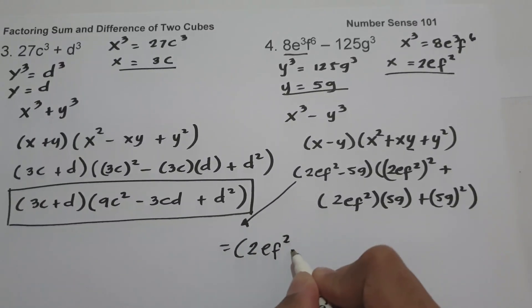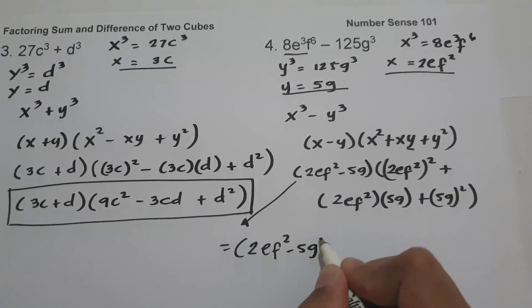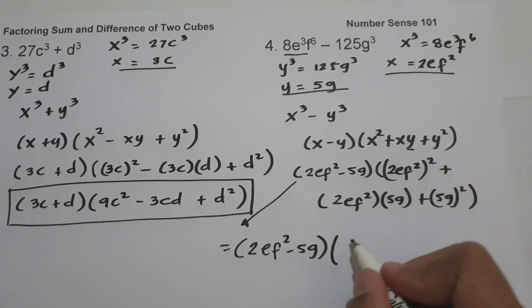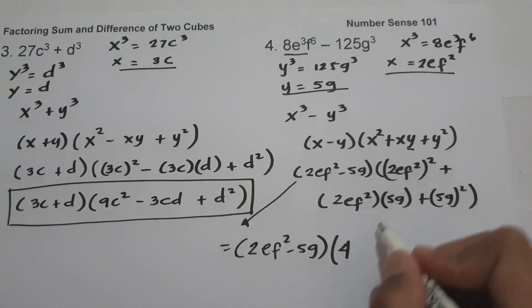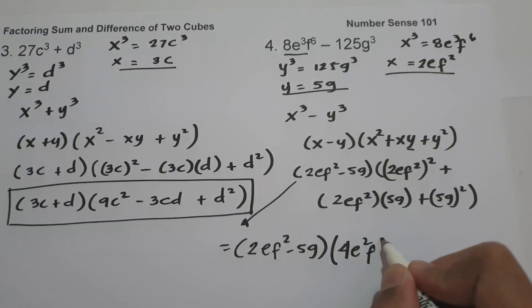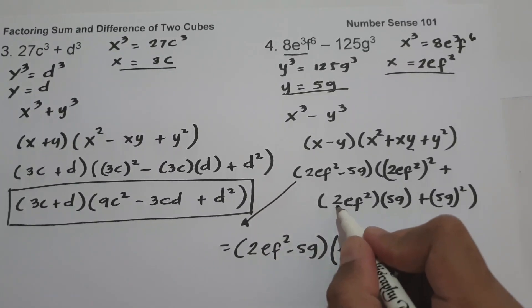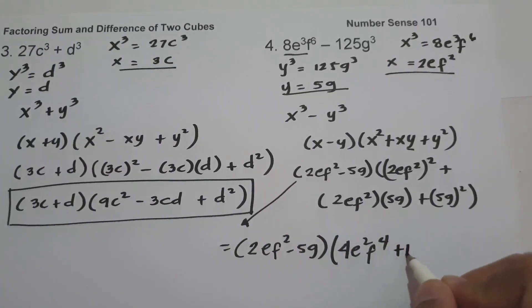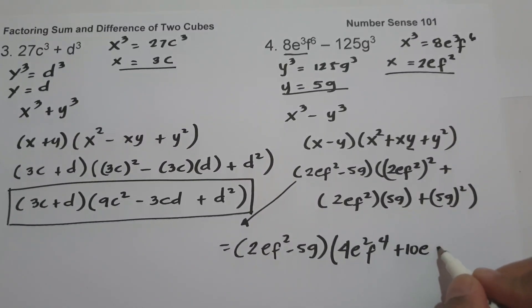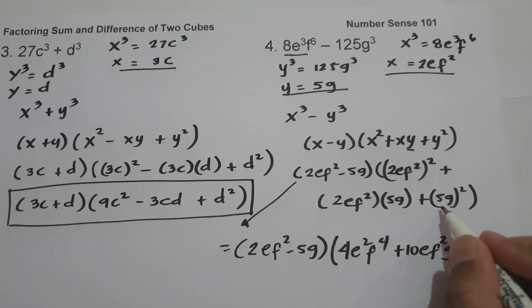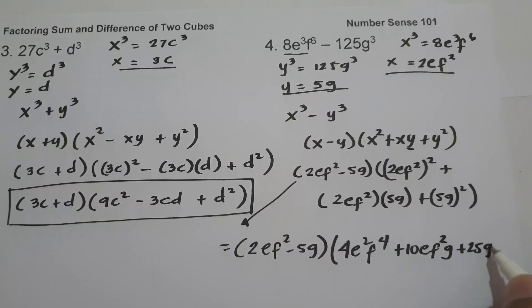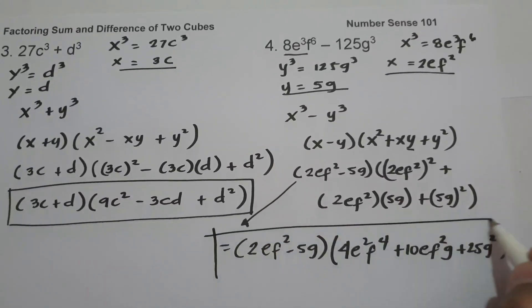Simplifying: we have (2ef² − 5g) times the quantity 4e²f⁴ + 10ef²g + 25g², and this is our answer.